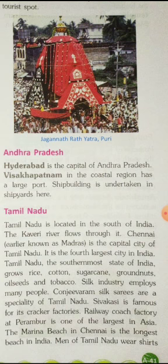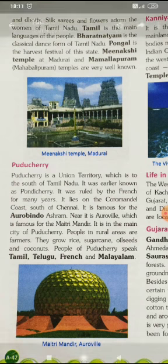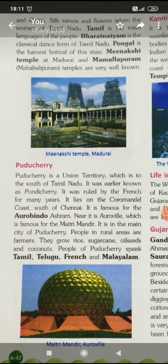Men of Tamil Nadu wear shirts and dhotis. Silk sarees and flowers adorn the women of Tamil Nadu. Tamil is the main language of the people. Bharatnatyam is the classical dance form of Tamil Nadu. Pongal is the harvest festival of this state. Many temples are found here — the Meenakshi temple at Madurai and Mahabalipuram temples are very well known.